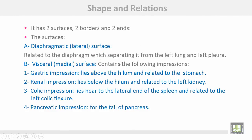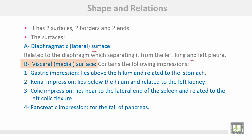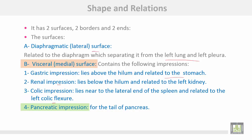The spleen has two surfaces, two borders, and two ends. The surfaces are: number one, the diaphragmatic or lateral surface, related to the diaphragm, which separates the spleen from the left lung and left pleura. The visceral or medial surface contains impressions: above the hilum is the gastric impression from the stomach; below the hilum is the renal impression from the left kidney; the colic impression near the lateral end is related to the left colic flexure; and the pancreatic impression in the hilum itself is for the tail of the pancreas.